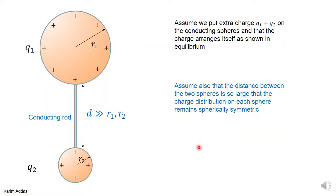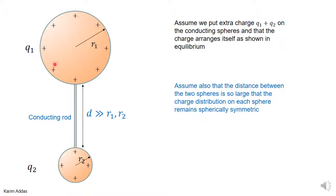Let's see how we can make this simple argument. We'll assume that we put a total charge of Q1 plus Q2 on the conducting spheres. This charge will arrange itself so that Q1 is on one conductor and Q2 is on the other. Remember the conductors are connected, so this is all one big conductor, and the charge distributes on the surface of both spheres. We're neglecting any charge buildup on the thin rod.